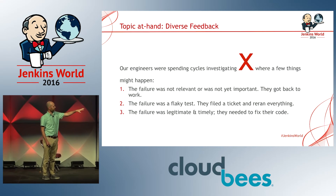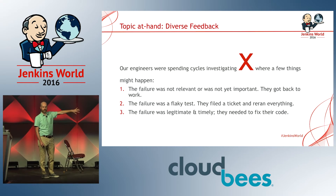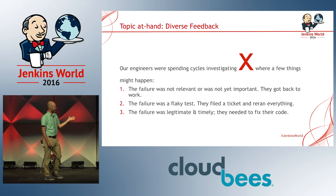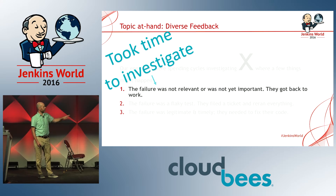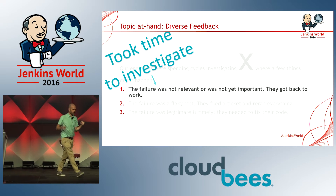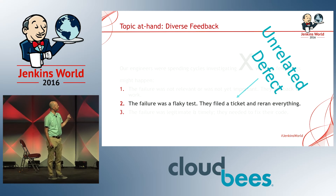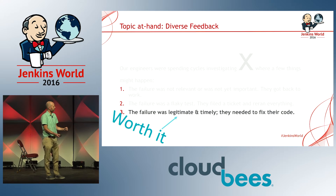What we found is that our engineers were spending cycles looking at the red X in various ways. I'm giving you three examples of the outcome of that investigation. First, sometimes the failure was just not important or wasn't relevant. Sometimes the failure was a flaky test, unrelated to the changes. And sometimes it was totally worth it — there was actually a problem the CI system found that needed to be addressed. In each case, it took time to investigate before determining whether to continue with code review.